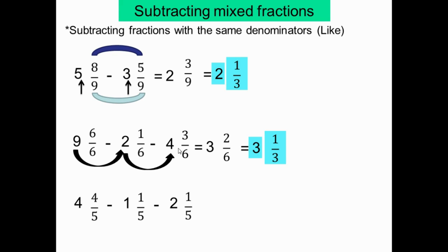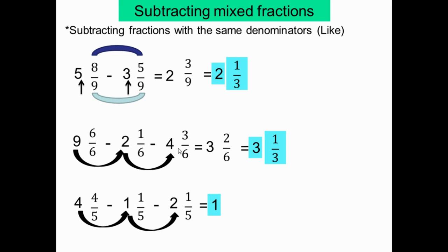Exercice 2: 4 4/5 moins 1 1/5 moins 2 1/5. On soustrait les entiers: 4 moins 1 égal 3, 3 moins 2 égal 1. Même dénominateur: on soustrait les numérateurs: 4 moins 1 égal 3, 3 moins 1 égal 2. La réponse est 1 et 2/5.